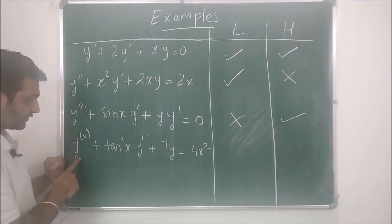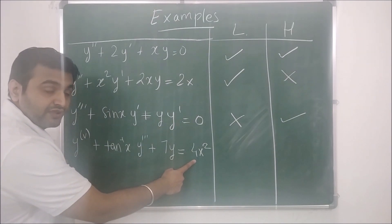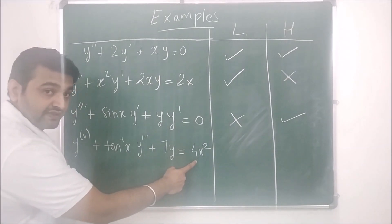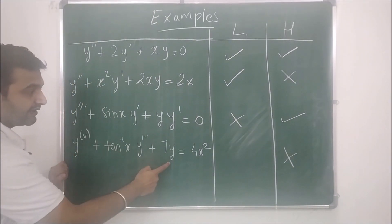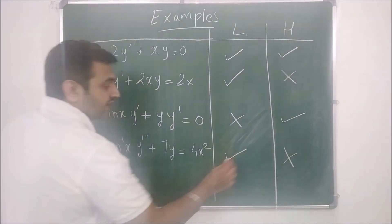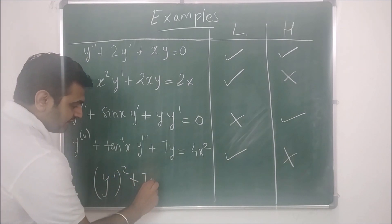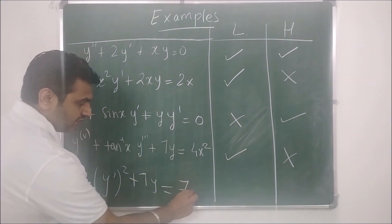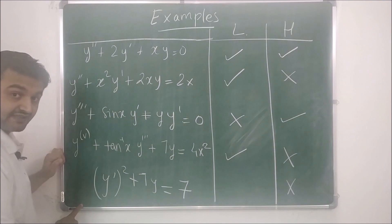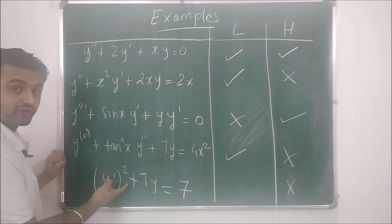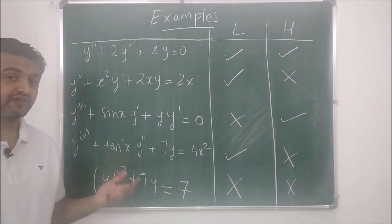The third is a fifth order differential equation; since it has a term independent of the dependent variable it is non-homogeneous. But is it linear? No — we have (y')² so the degree of y' is 2, therefore it is not a linear differential equation. This is how one can classify differential equations as linear or nonlinear, and homogeneous or non-homogeneous.